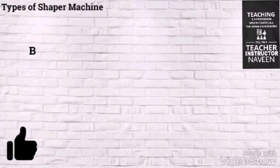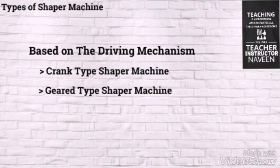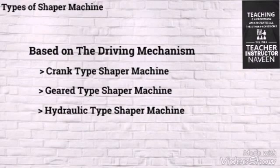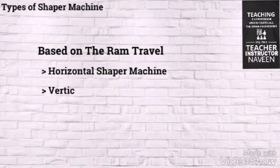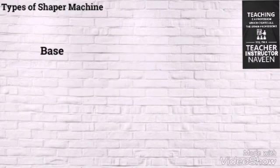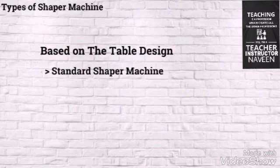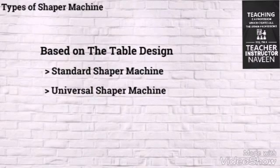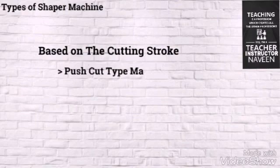Based on the driving mechanism, the different types of Shaper Machine are: Crank type, Geared type, and Hydraulic type. Based on the RAM travel: Horizontal and Vertical Shaper Machine. Based on the table design: Standard and Universal Shaper Machine. Based on the cutting stroke: Push cut type and Draw cut type.